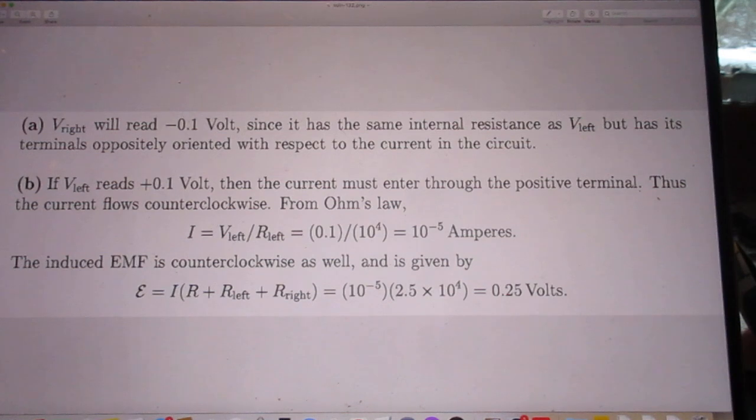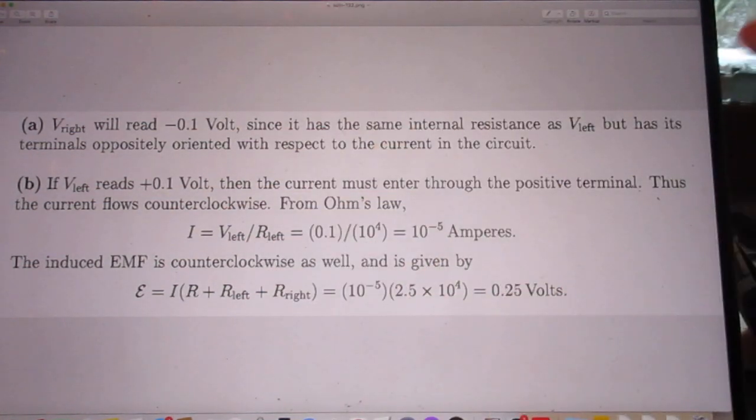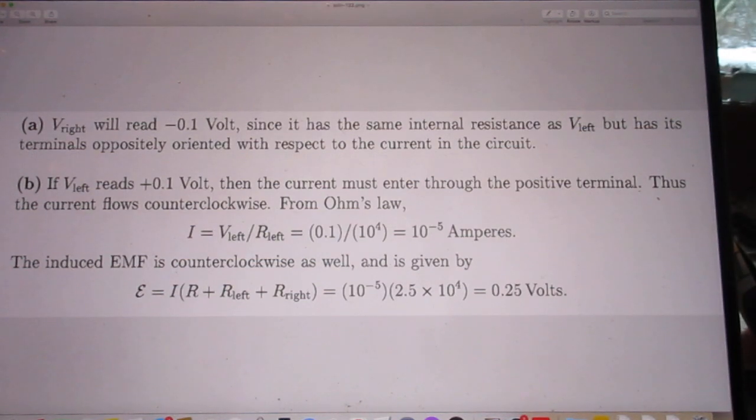Here we are. A, first question. What does the voltmeter on the right indicate? Clearly that is minus 0.1 volts. Now, you know the potential difference over the voltmeter on the left, it's plus 0.1 volts. And you know its resistance is 10 to the 4. So clearly the current that is going around counterclockwise is 10 to the minus 5 amperes.